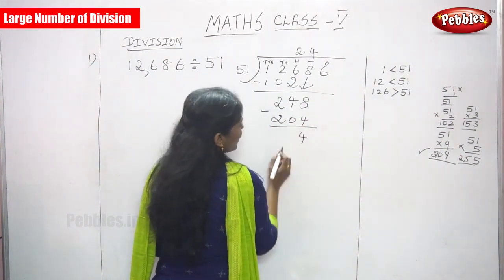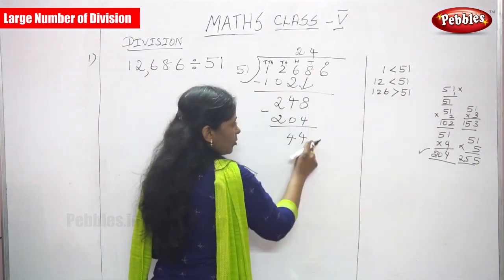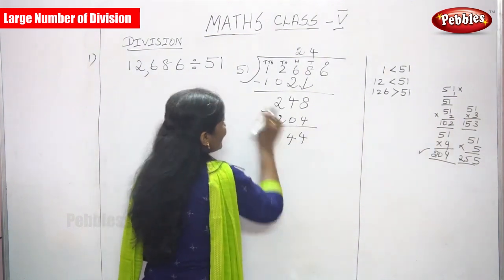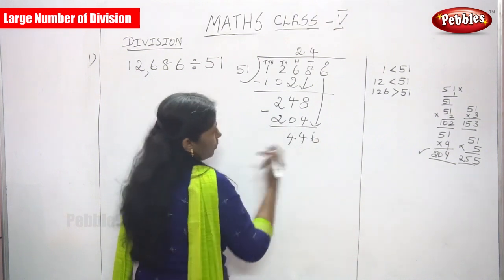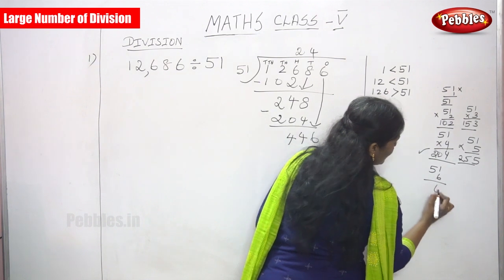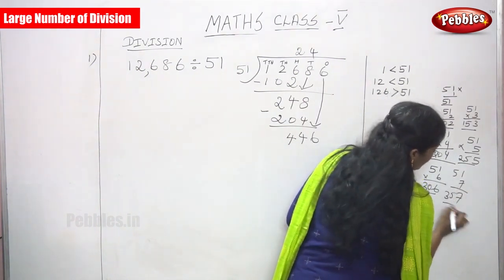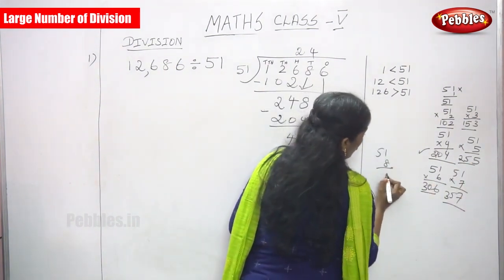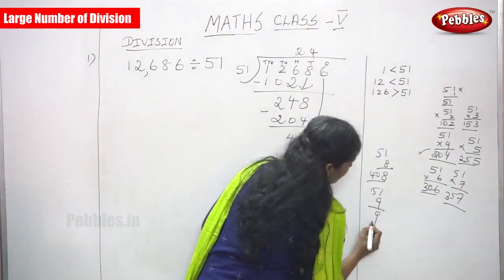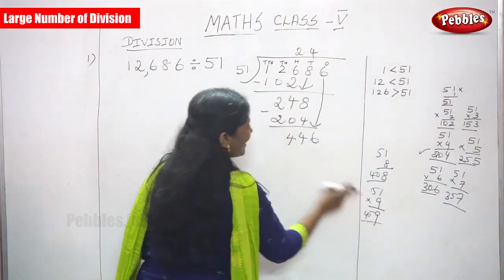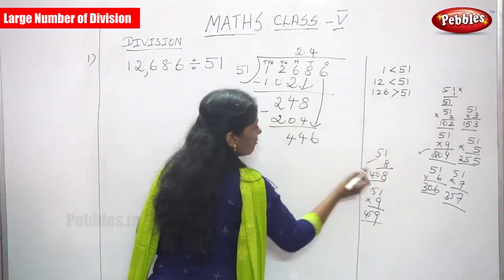Subtract: 248 minus 204. 8 minus 4 is 4, 4 minus 0 is 4, 2 minus 2 is 0 — giving remainder 44. Again, 44 is less than 51, so bring down the next digit, 6, making it 446. Try 51×6=306, 51×7=357, 51×8=408. Since 51×9=459 is greater than 446, the right choice is 51×8=408. Write 8 in the ones place.